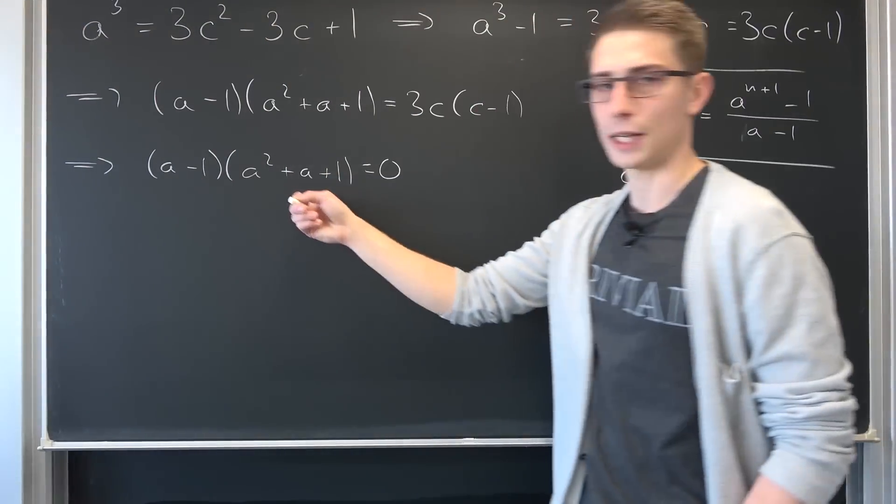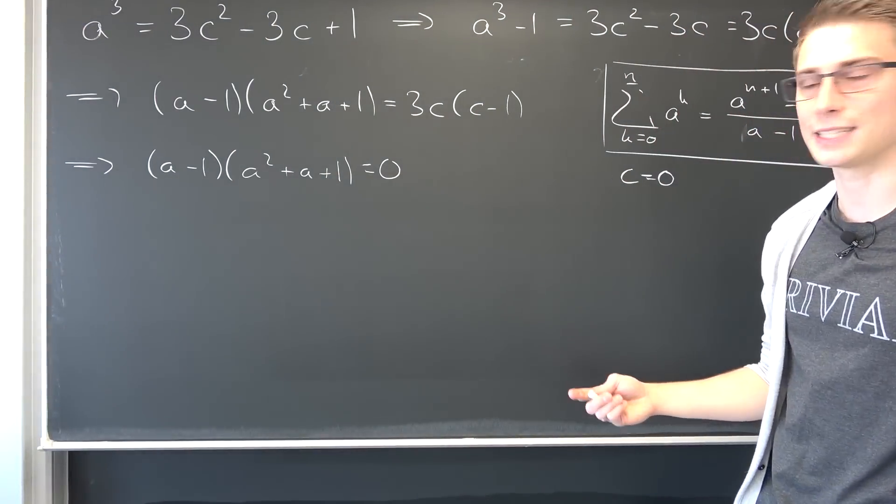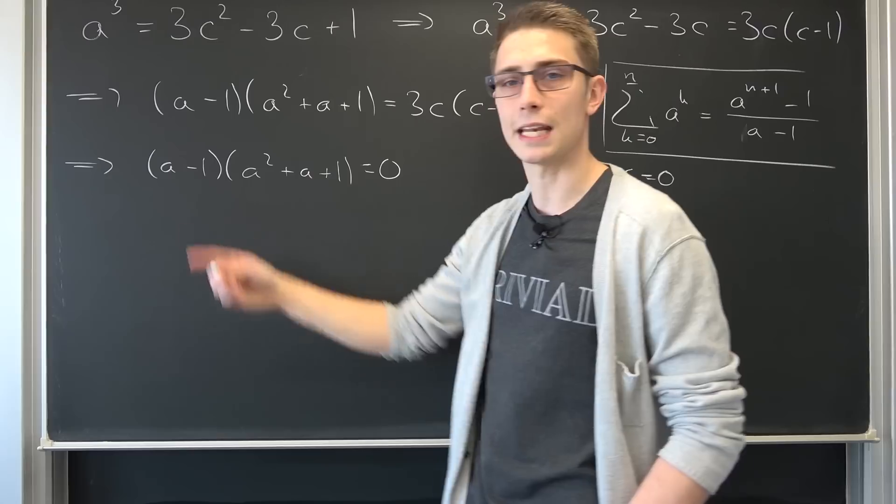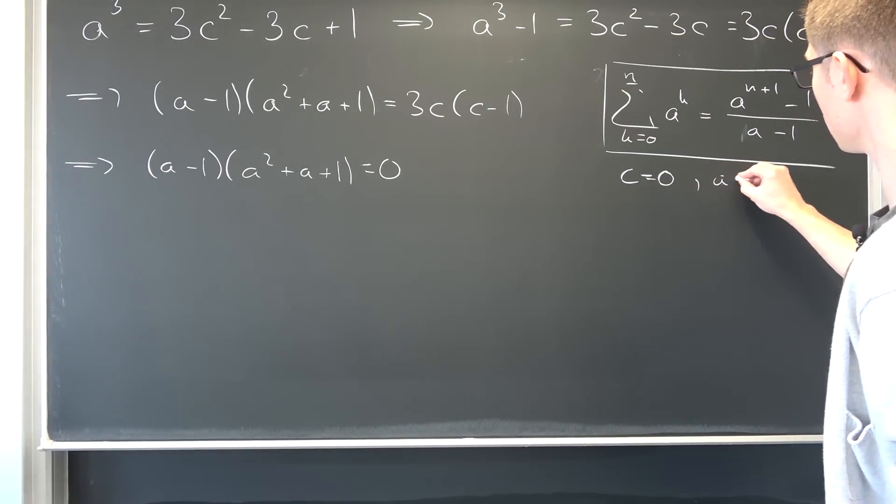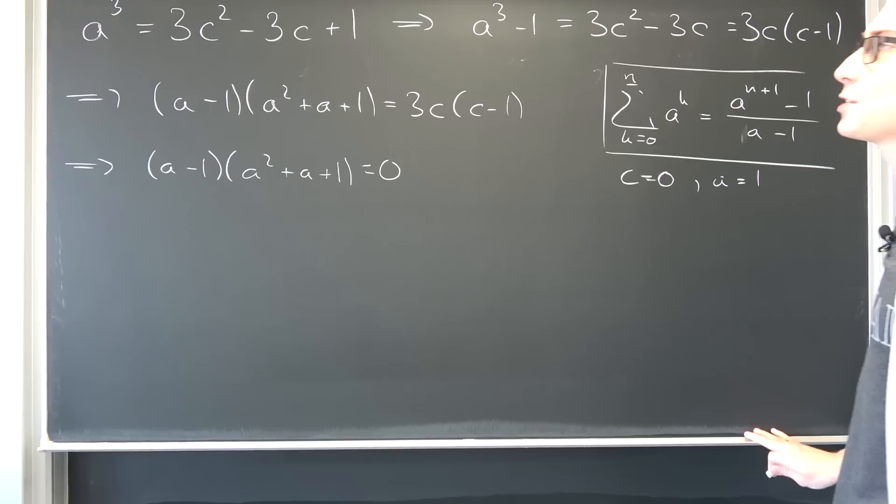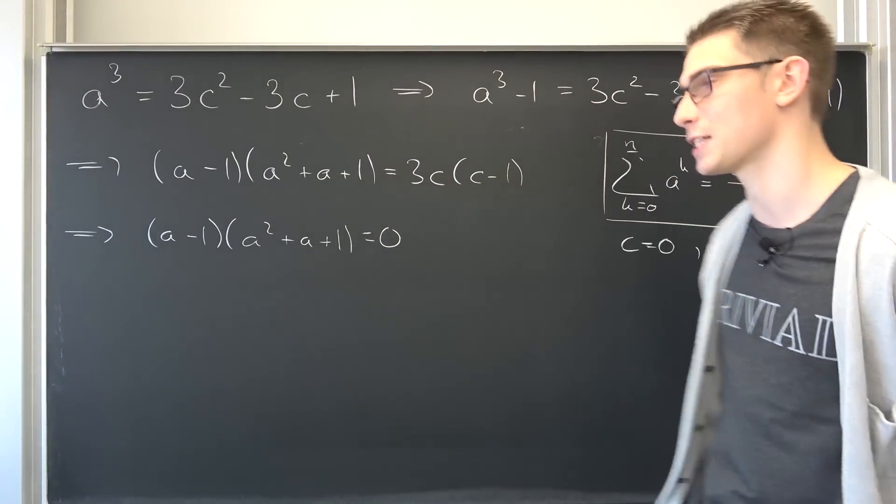Now, this can definitely go to zero, okay? This is something that works because if we set a being equal to one, we are going to have our first pair of solutions that actually satisfies this Diophantine equation.